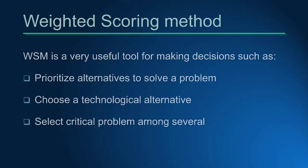The Weighted Scoring Method is a tool to rank completely different alternatives for a problem — to choose the best suitable technology for an application, or to select the most critical problem among several.